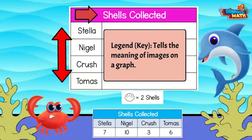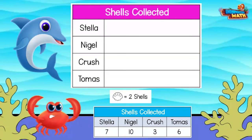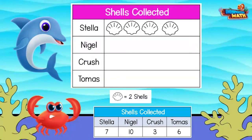So each shell on our pictograph is going to be worth two. Let's get started. Stella found seven shells. Remember, each shell is worth two. Let's put the shells on: two, four, six, eight. Oops — when counting by twos, we can't make an odd number. What should we do?